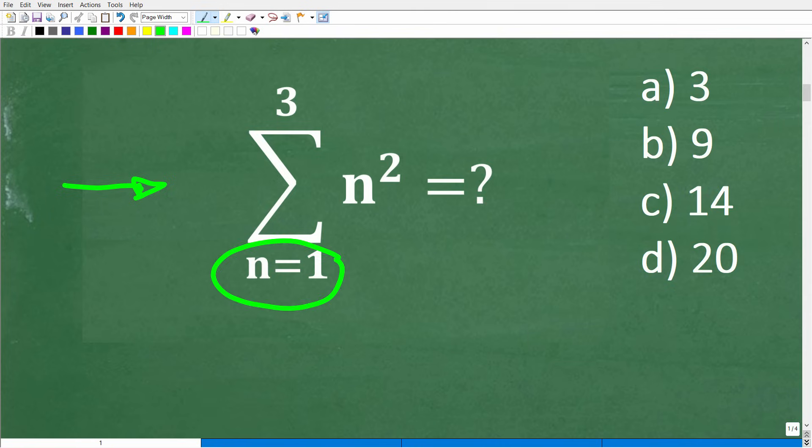If n is equal to 1, all right, so we have an n squared. Well, if n is 1, that would be what? 1 squared. So maybe the answer is 1, but we also have a 3 up here, so we don't see 1 as an option.